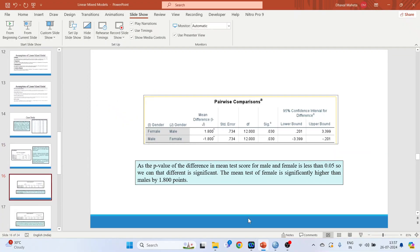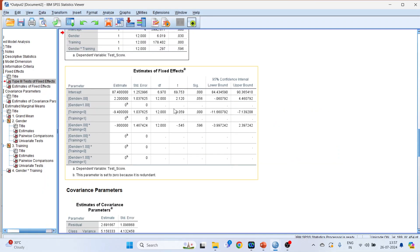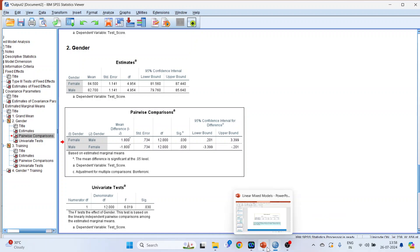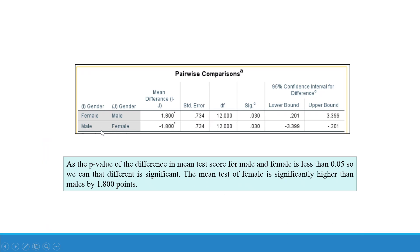For the pairwise comparison, we found a significant difference in test scores between males and females. The mean score of females minus the mean score of males gives a difference of 1.8, with a p-value less than 0.05. As the p-value is less than 0.05, we can say the difference is significant. The mean test score of females is significantly higher than males by 1.8 points.